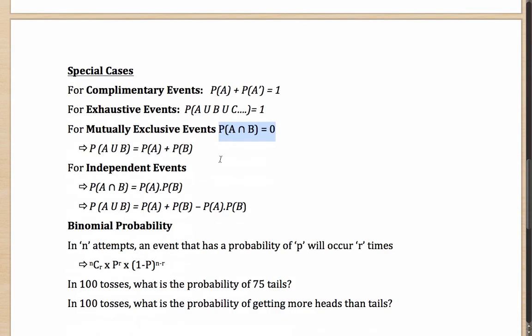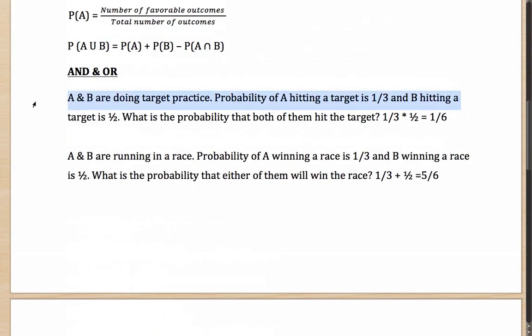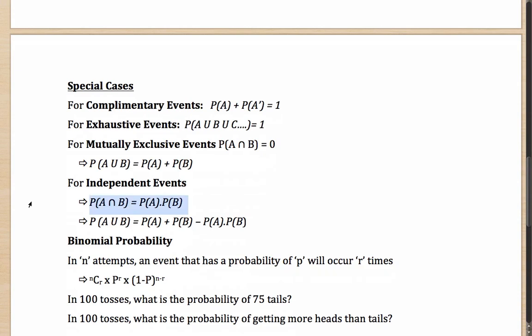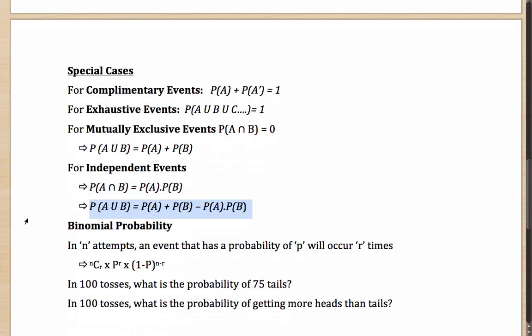What are independent events? Independent events are those in which there is no connection between the events. If A hits the target, it has no significance on B. The target practice example is a case of independent events — probability of A hitting is 1 by 3, B hitting is half, and to B it does not matter whether A has hit or not. In such cases, probability of A intersection B equals probability of A multiplied by probability of B, which modifies the formula for A union B to P(A) plus P(B) minus P(A)·P(B).